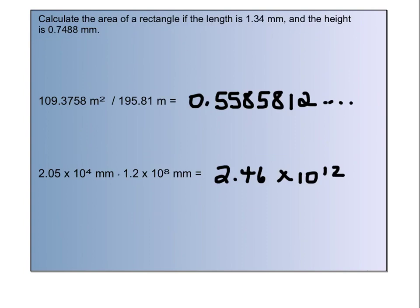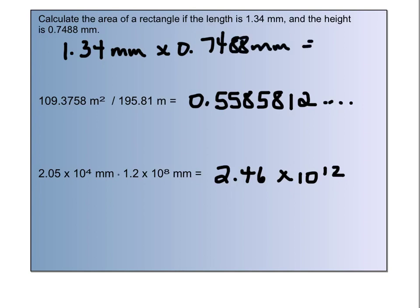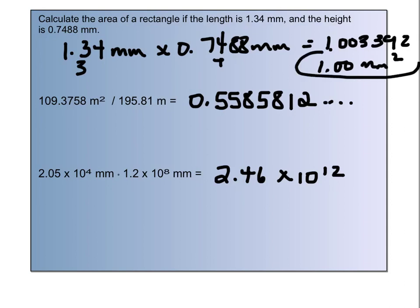Now we have a little word problem: calculate the area of a rectangle if the length is 1.34 millimeters and the height is 0.7488 millimeters. We don't do area often in chemistry, but this is just for practice. Area equals length times height — 1.34 mm times 0.7488 mm gives 1.003392. We have three significant figures versus four, so we round to the lower number, three, giving us 1.00. And millimeters times millimeters is millimeters squared, so our final answer is 1.00 mm².